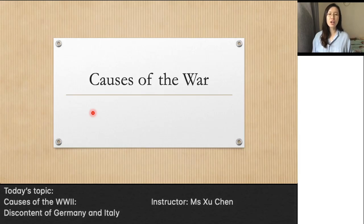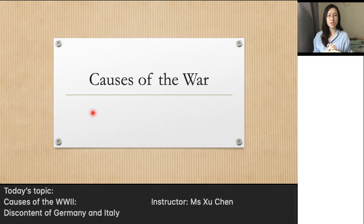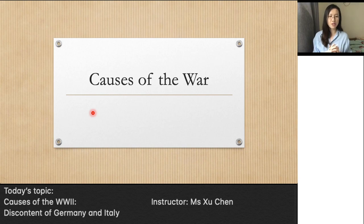Today we'll continue talking about the causes of the Second World War. In the last few classes, we focused on three things: the new nation-states formed after the First World War, the declining influence of Europe, and the rising status of the US and Japan. Today we're going to talk about some other factors which led to the causes of the Second World War.